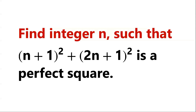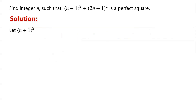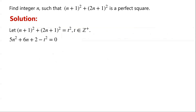Find integer n such that (n+1)² + (2n+1)² is a perfect square. We let (n+1)² + (2n+1)² equal t², where t is a positive integer. Expanding the square terms and rearranging the equation, we have 5n² + 6n + 2 − t² = 0.